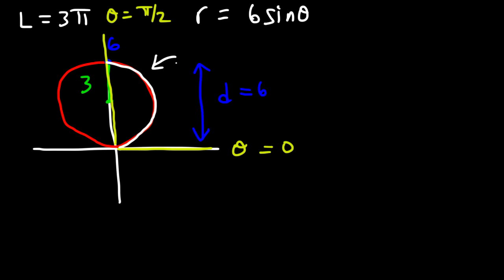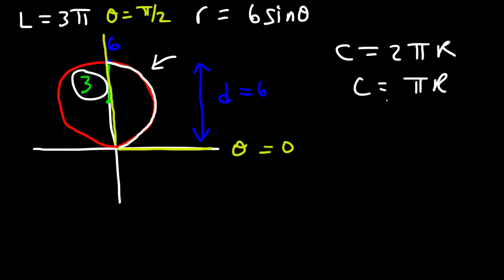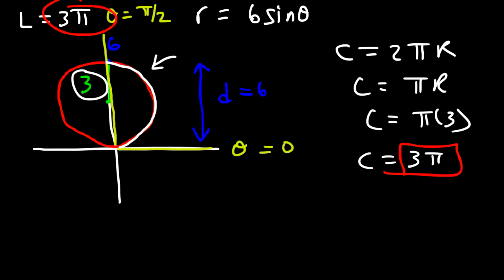Another way to calculate it is using the circumference of a circle. The circumference of a full circle is 2πr, so for half a circle it's πr. The radius is 3, so it's π times 3, which is 3π. That is in agreement with our calculus answer — the arc length from 0 to pi over 2 is 3π.